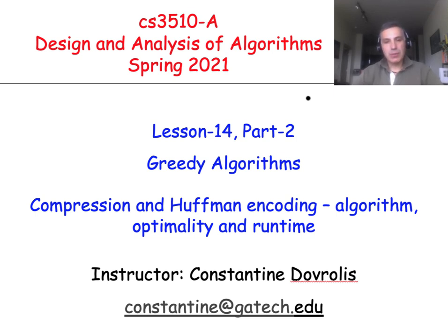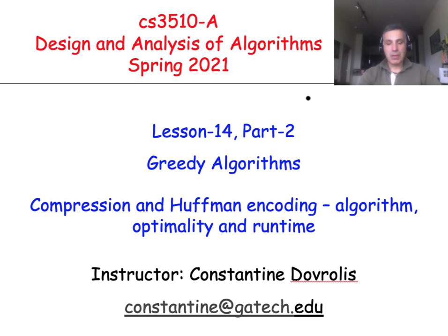In the previous part of this lesson, we studied the problem of variable length encoding and how you can try to create code words that minimize the average bit length. The structural property that we saw in the end of part 1 was that the optimal encoding is such that the two symbols with the lowest frequency appear at the maximum depth of the corresponding binary tree. So now we can actually see the algorithm that Huffman came up with in the late 50s to solve this problem.